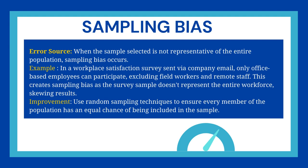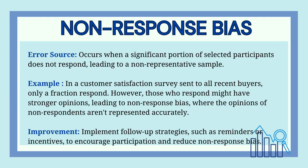That will skew the results. The improvement here is to use random sampling techniques to ensure that every member of the population has an equal chance of being included in the sample. Another kind of bias is non-response bias.